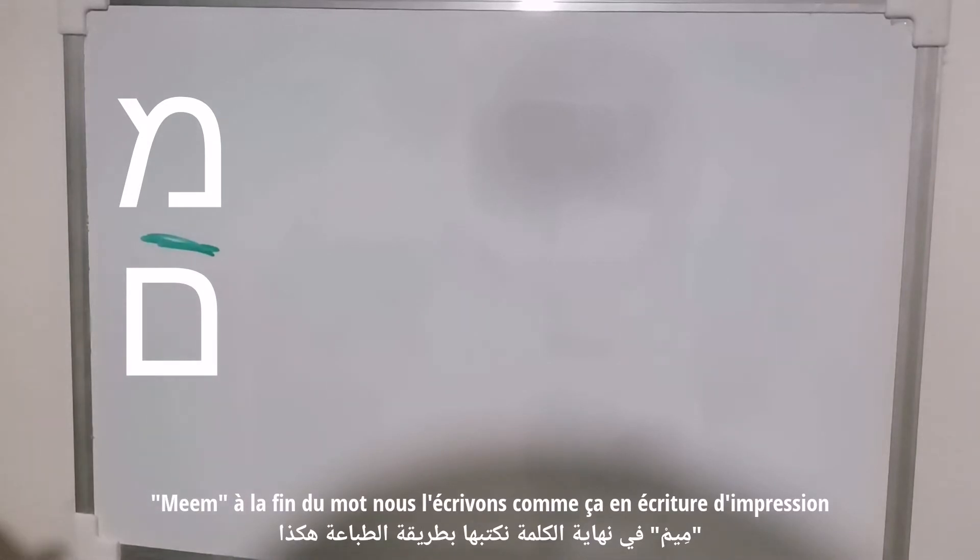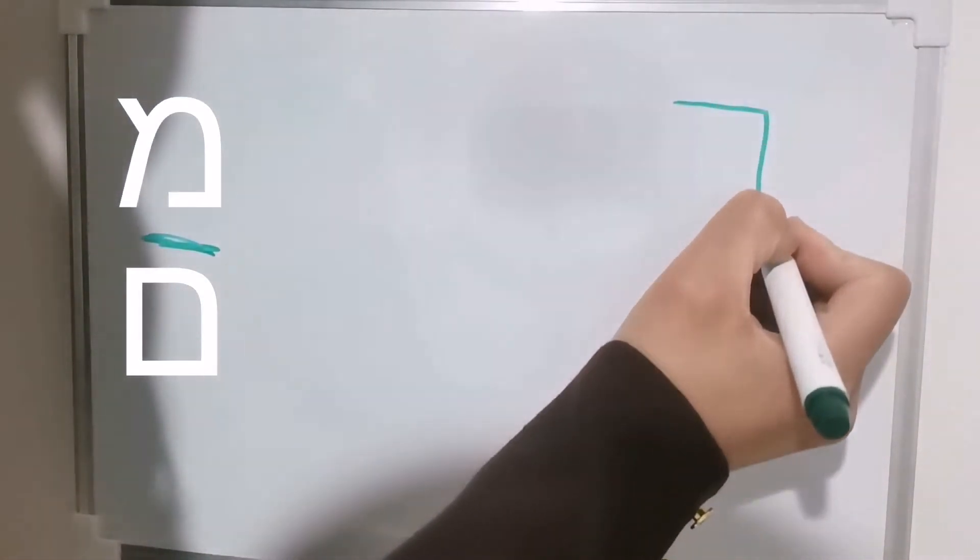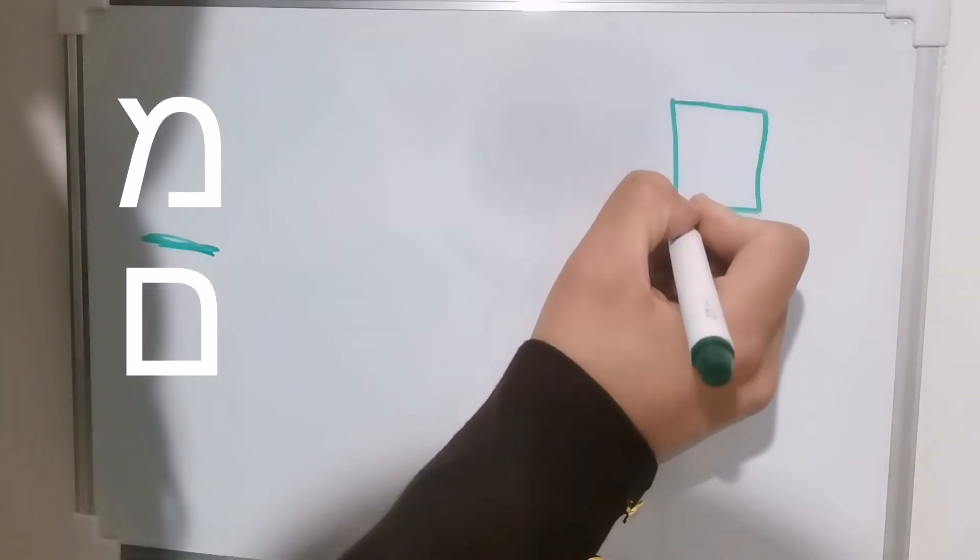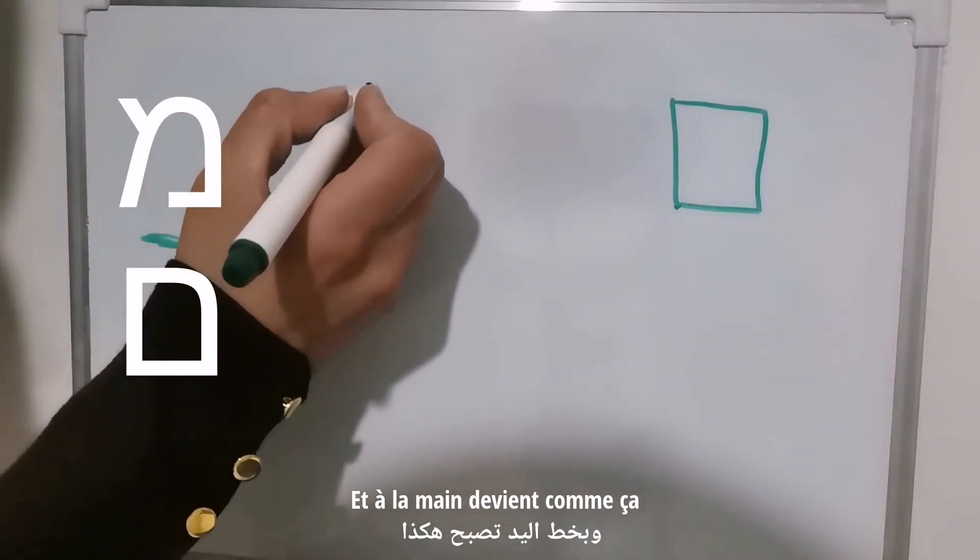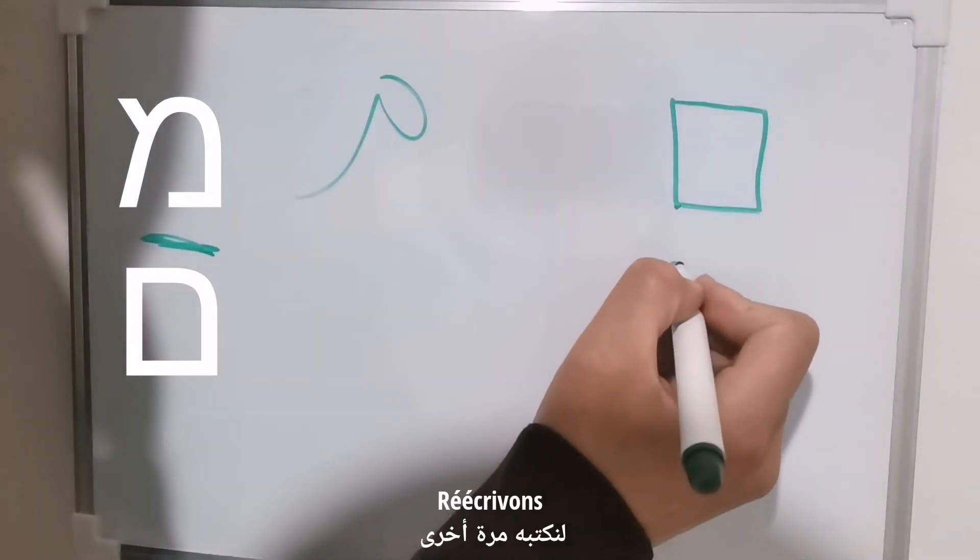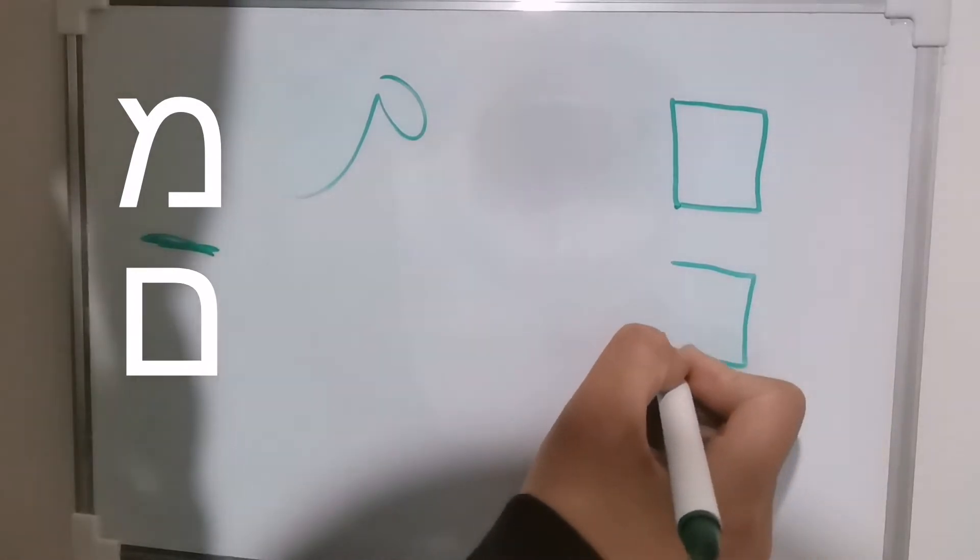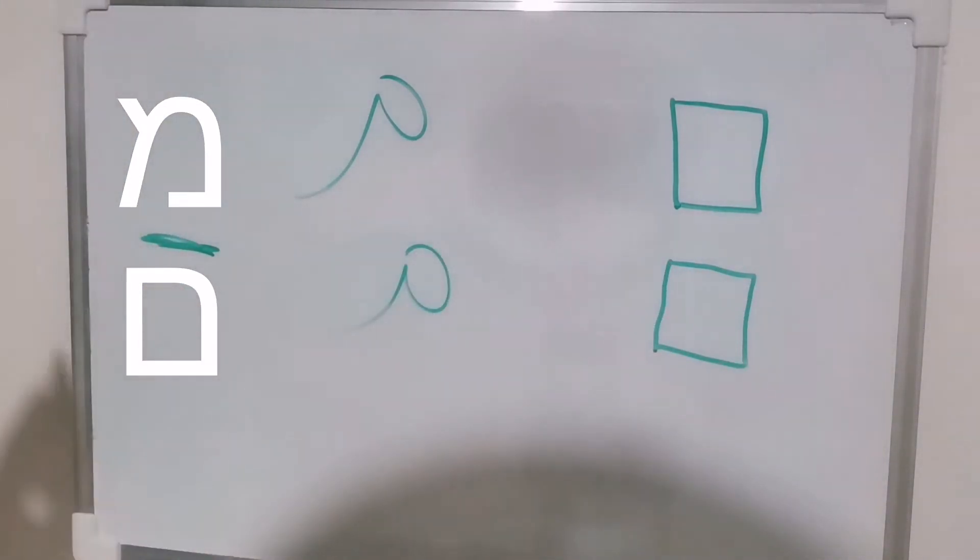You write it like this in print version, and my handwriting becomes like this. Let's write it again. This is Mim, and we call it Mim Sofit.